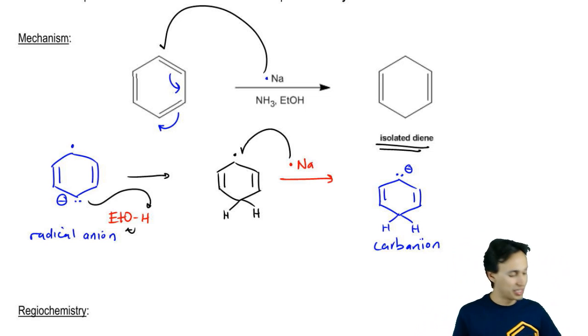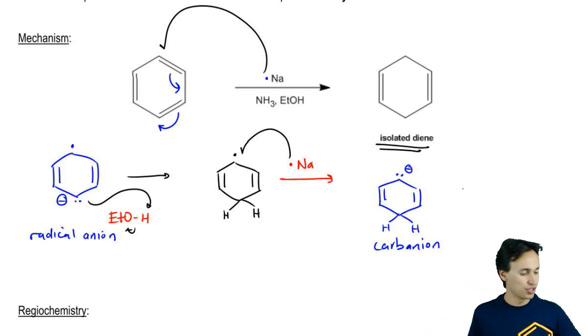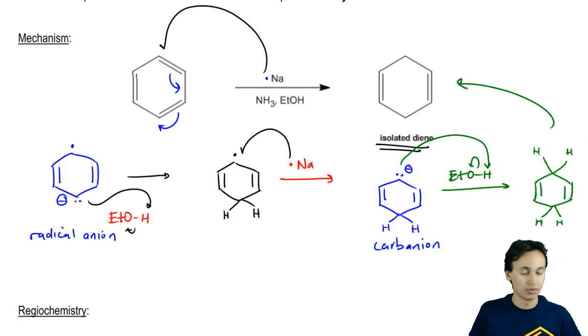This reaction just repeats itself. That's one thing about maybe dissolving metal reduction if you recall. It was the same thing twice. Here, we would react again with another equivalent of ethanol and we would wind up getting our isolated diene because now we've got two H's on the bottom. I've got two H's on the top. It's the ugliest H ever. And I've got my isolated diene which is this molecule here.